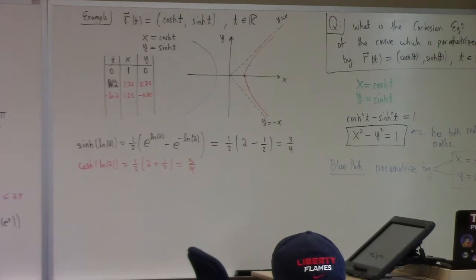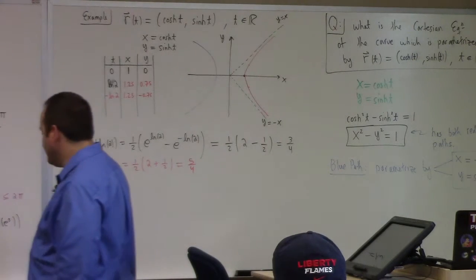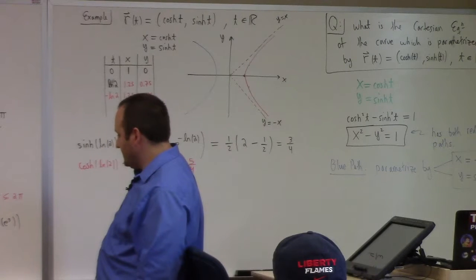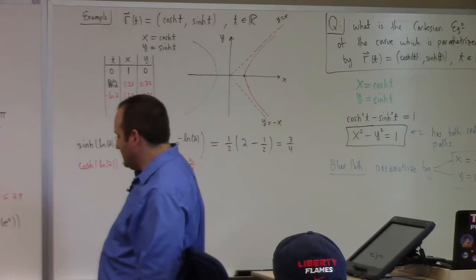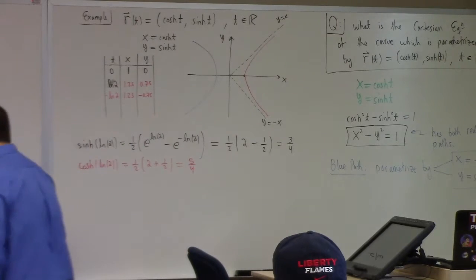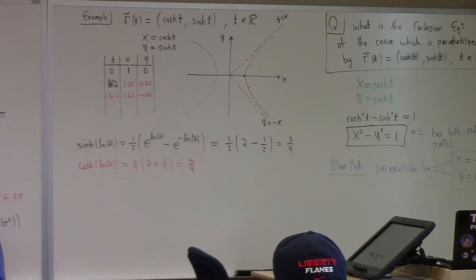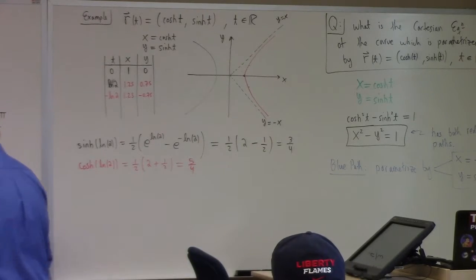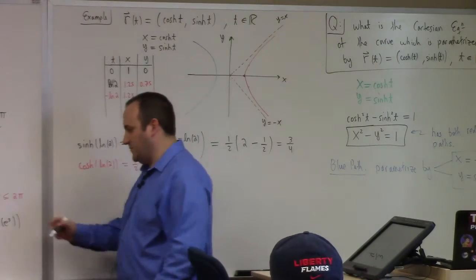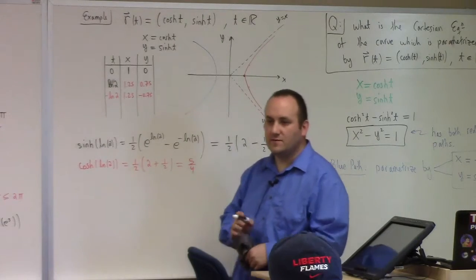For what range of s? To get e to the s equals pi, I put s equals log pi. And I put log 2 pi. That would be another way to parametrize that lower half of the circle. What would the difference be?